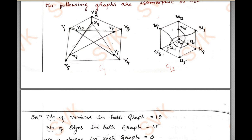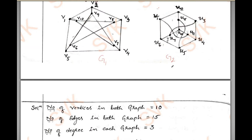The degree of each vertex is 3. Consider any vertex: V9 is 3, V10 is 3, V1 is also 3, V7 is also 3; here also U7 is 3, U10 is also 3. So when you consider both G1 and G2, they contain equal number of vertices, equal number of edges, and equal number of degrees. Therefore, isomorphism has been preserved here.